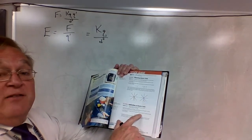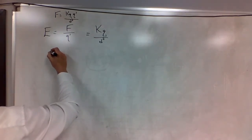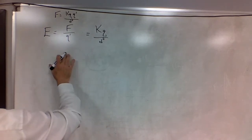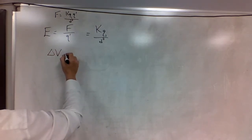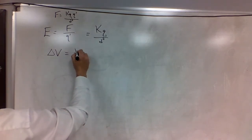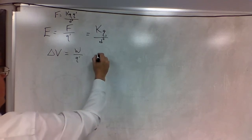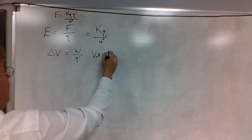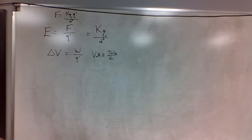We also know that the electrical potential energy difference — being at one spot in an E field versus another — is the work to move a test charge divided by the test charge. That's the change in potential energy from one position to another. It equals work divided by the test charge, or joules per coulomb. A volt is equivalent to a joule per coulomb.